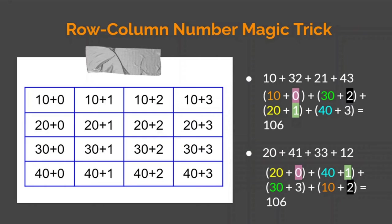So which property does this magic trick use? It is an application of commutative property and associative property of addition. Now we will learn one more interesting property of whole numbers.